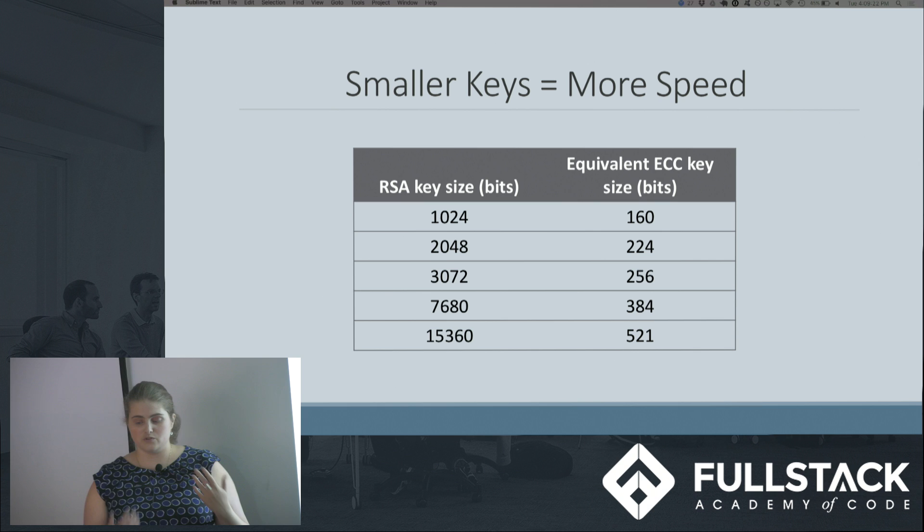As computers have gotten faster, other crypto systems have needed to increase their key size significantly. The mathematics of cracking the elliptic curve discrete log problem seems to be harder than those of older generation crypto systems. As we increasingly need to send secure information over the internet, we need faster algorithms. Similarly, we now send and receive messages from devices like smartphones, which have less processing power and storage space. So we have a necessity for these smaller keys.